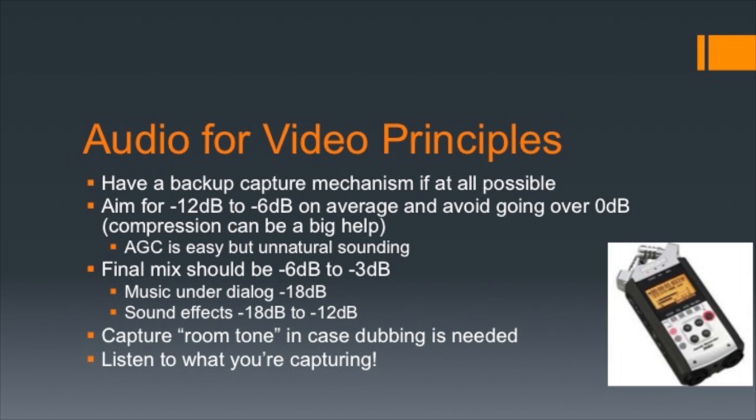Your final mix should peak at minus 6 to minus 3 dB, with a music bed sitting at around minus 18 dB and sound effects generally sitting in the minus 18 to minus 12 dB range. These are rules of thumb meant to be a starting point. Depending on the use of your final video, these levels may or may not be appropriate — you may have to turn them down in mastering if you need a certain maximum volume for broadcast purposes.